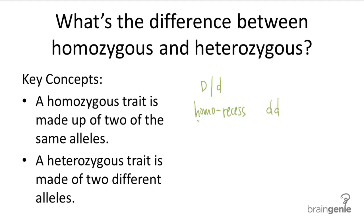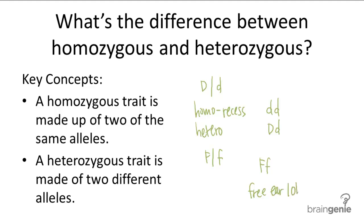What about the heterozygous genotype? Hetero means different, so that would be big D, little d. Another example: let's say big F codes for free earlobes and little f codes for attached earlobes. The heterozygous genotype would be big F, little f. And the phenotype of the heterozygous individual, by the law of dominance, would be free earlobes. Simple as that.